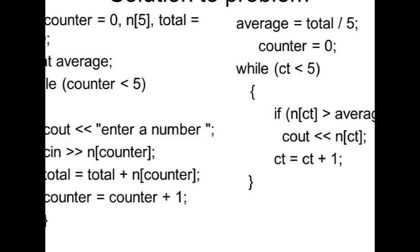Here's code where counter is initialized to zero, n[5] is an integer array, total equals zero. The loop runs while counter is less than 5. Input a number into n[counter], add it to total with total plus equals n[counter], then increment counter. Calculate the average.